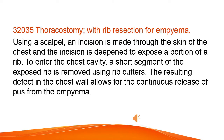Thoracostomy with rib resection for empyema. Using a scalpel, an incision is made through the skin of the chest and deepened to expose a portion of a rib. To enter the chest cavity, a short segment of the exposed rib is removed using rib cutters. The resulting defect in the chest wall allows for the continuous release of pus from the empyema.